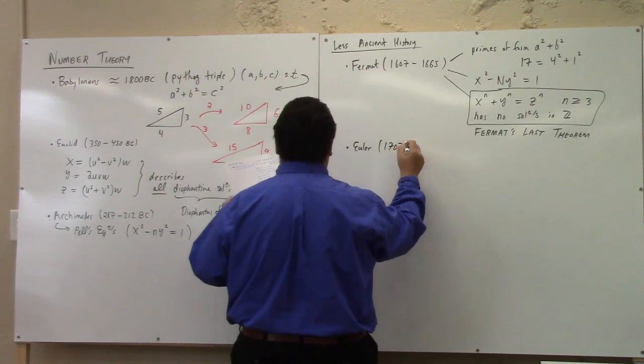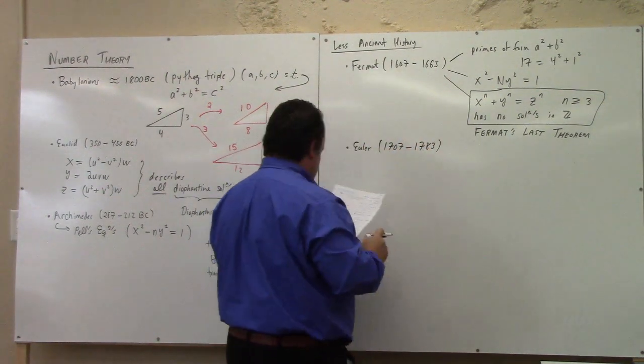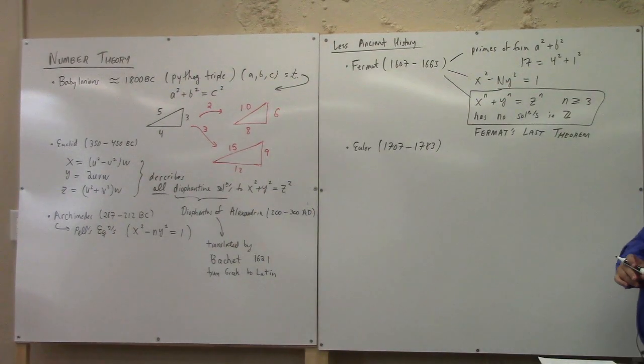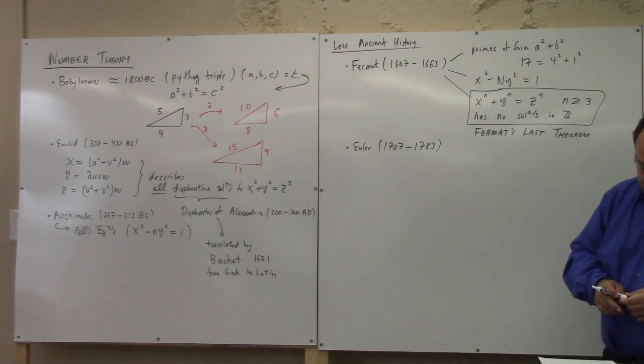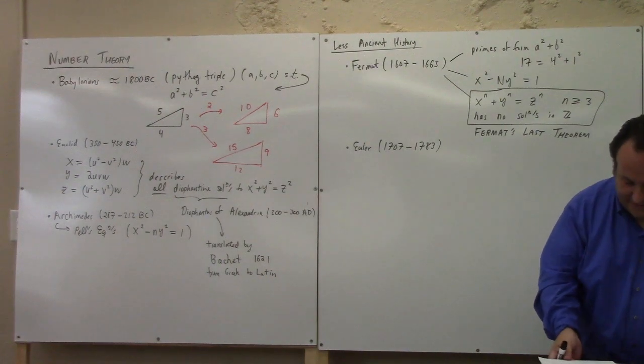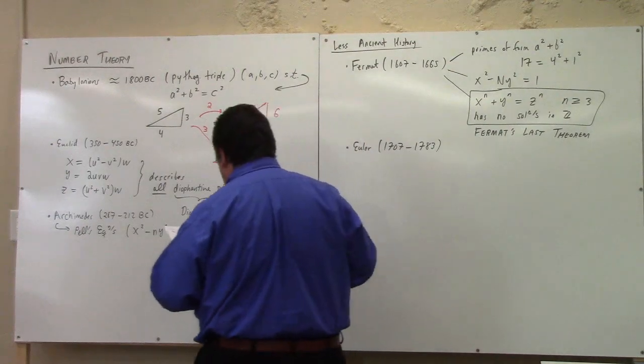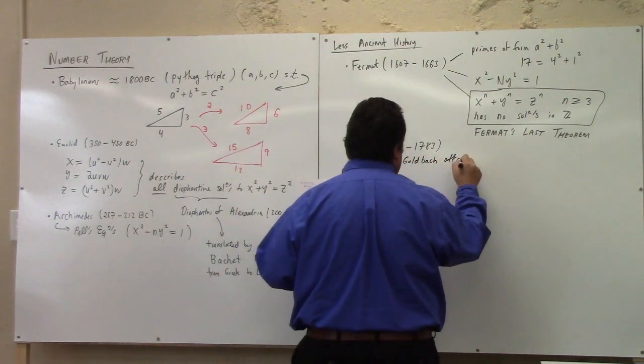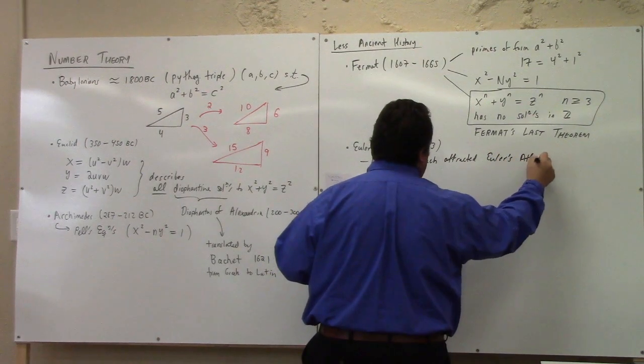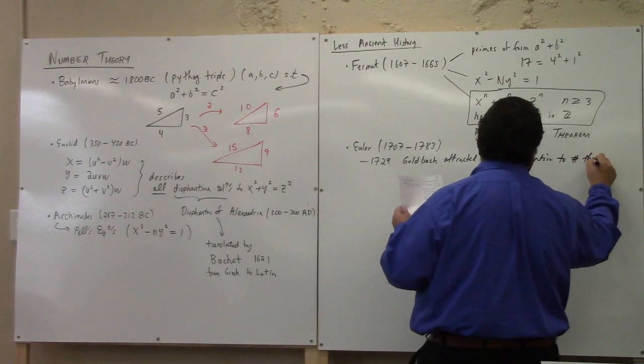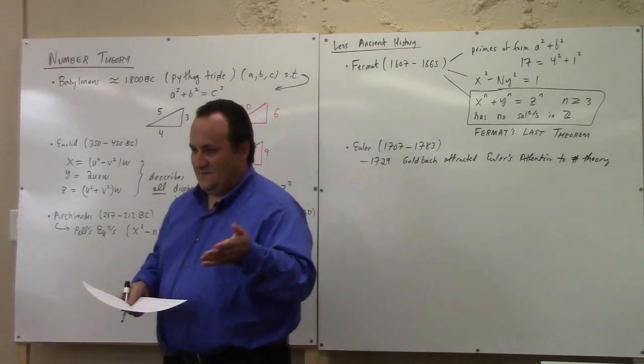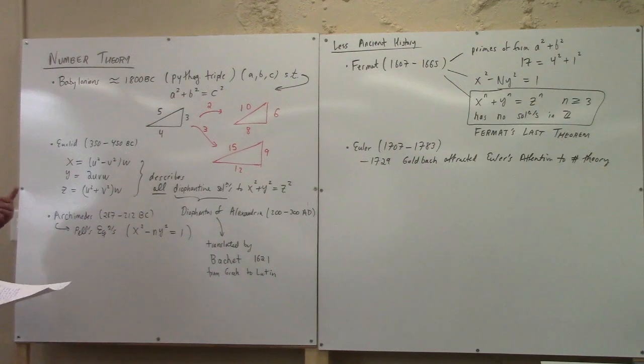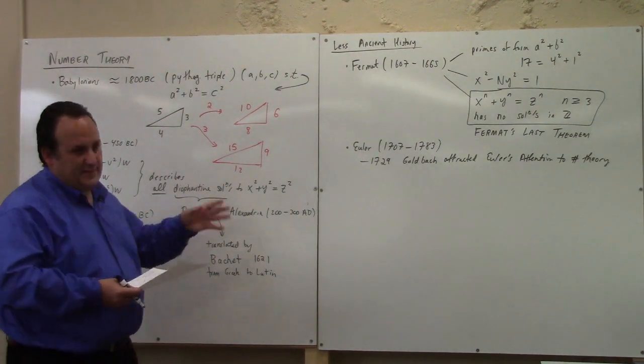Euler, 1707 to 1783. Euler is incredible. The longer you study math, the more you'll be impressed with what Euler did. In terms of number theory, apparently, Goldbach in 1729 attracted Euler's attention to Fermat's work. I think that's not quite accurate, but he said go look at Fermat's work. And Euler actually proved many of Fermat's claims.